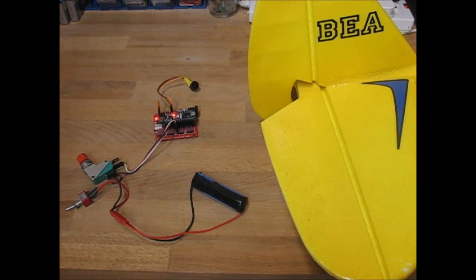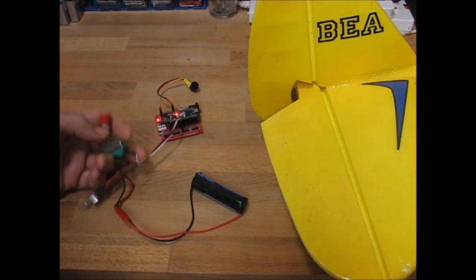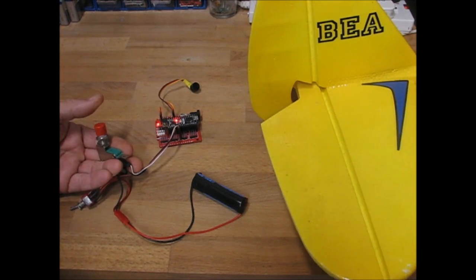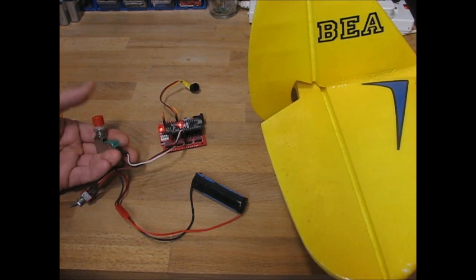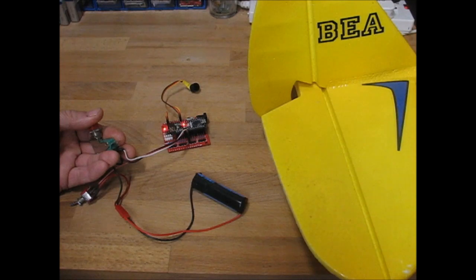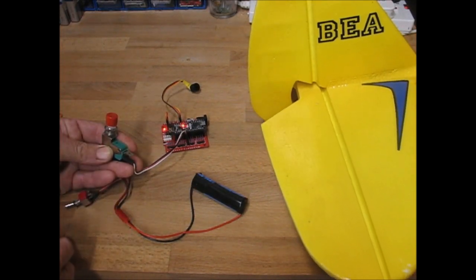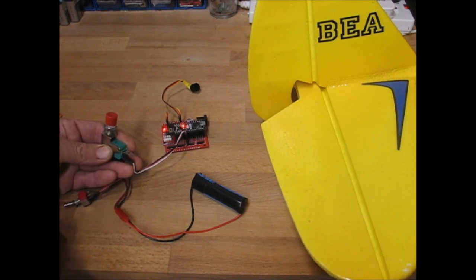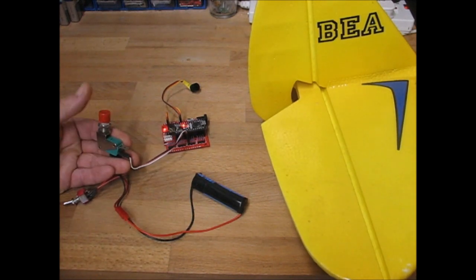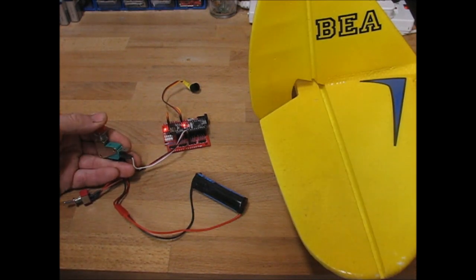So here's the gear installed in my long suffering cub. So we've got one for right, two for left, three for kick up, and quick blip throttle.